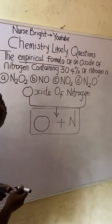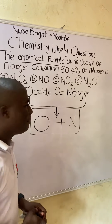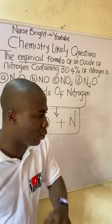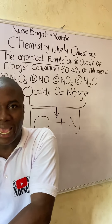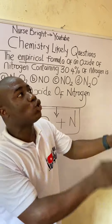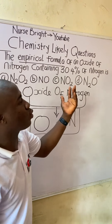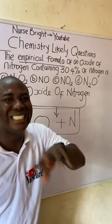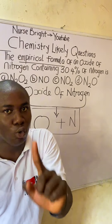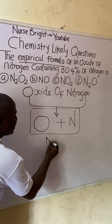We need to calculate the empirical formula of this oxide. Remember, the empirical formula is the simplest formula of a compound — the simplest form a compound can exist. The molecular formula, on the other hand, is the actual form the compound exists. We can look at the options, but it's important to know how to solve it.